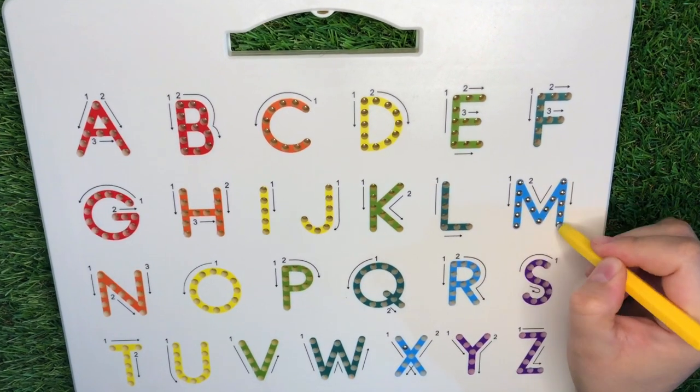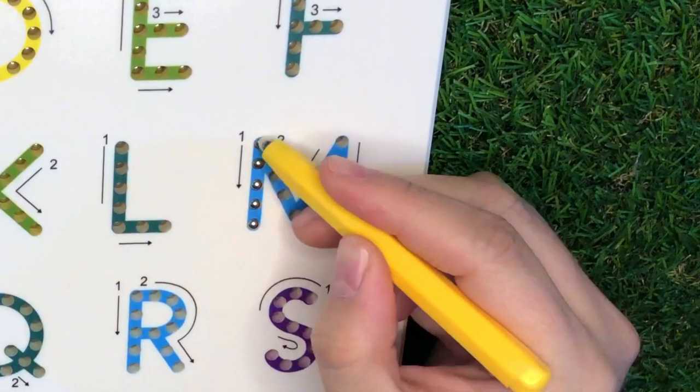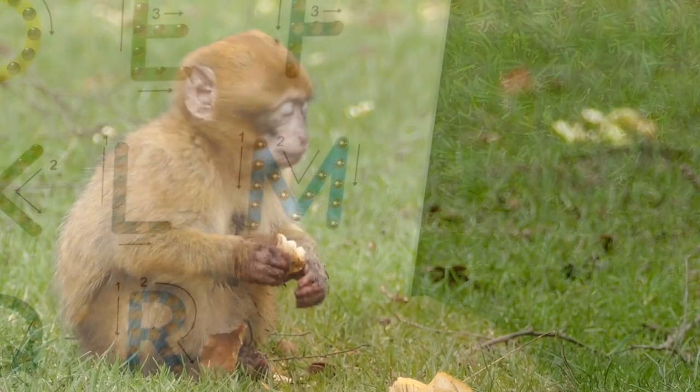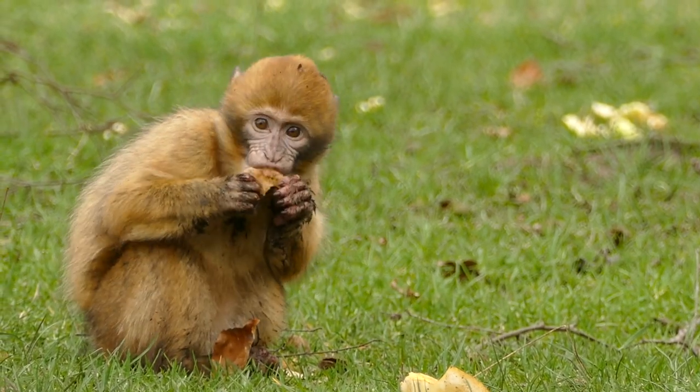Letter M. Pull down, slant down, slant up, and pull down. M is for monkey and mermaid.